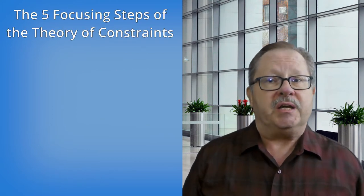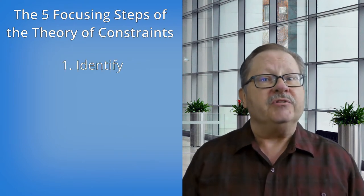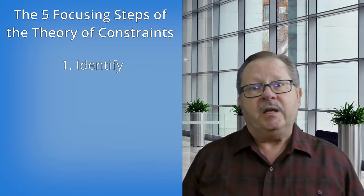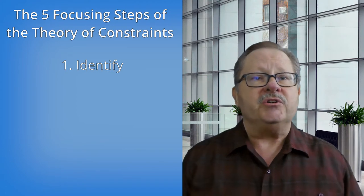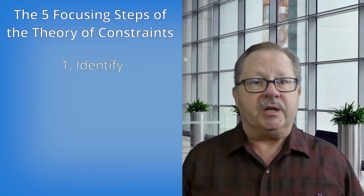The theory is guided by five focusing steps, as they are called in the book. First, identify the first system constraint. In a factory, that is the manufacturing stage that is the slowest, most bogged down or least productive.